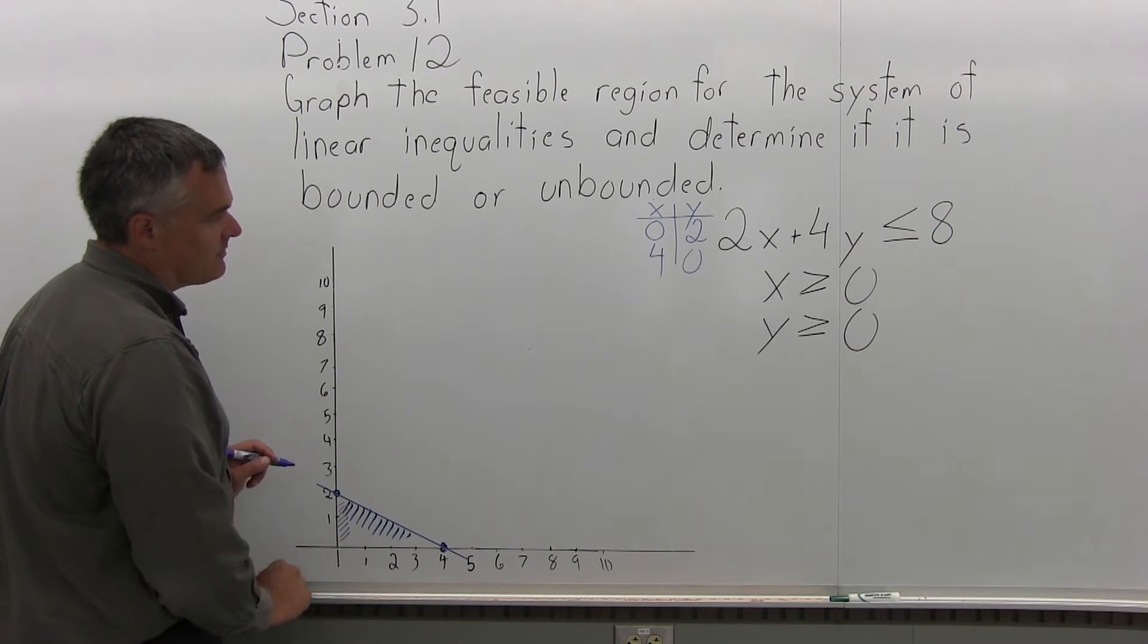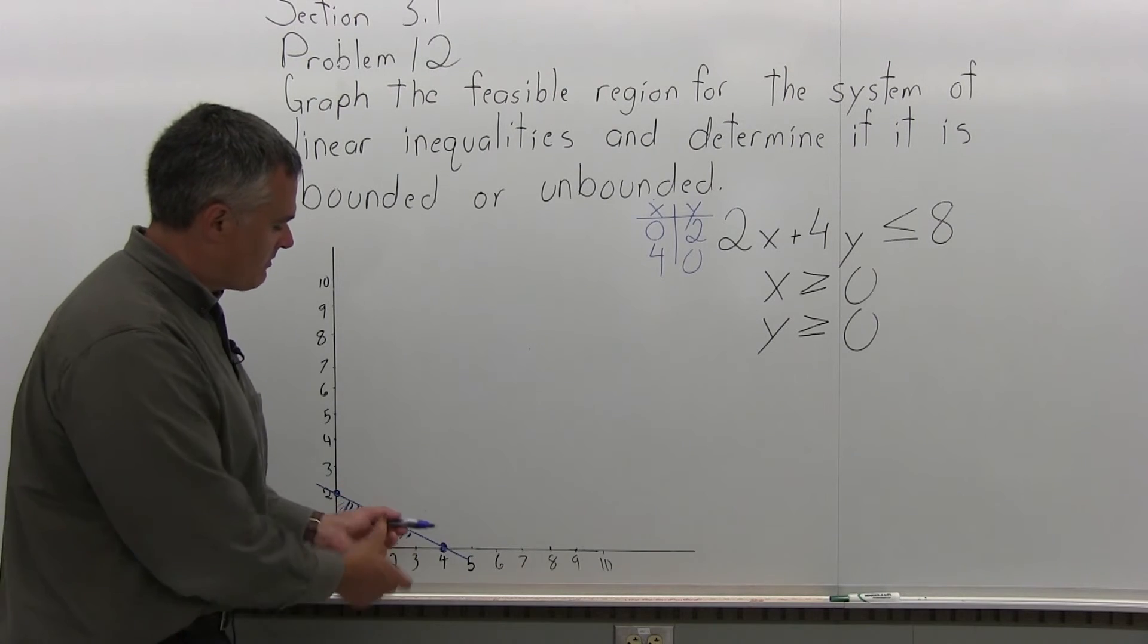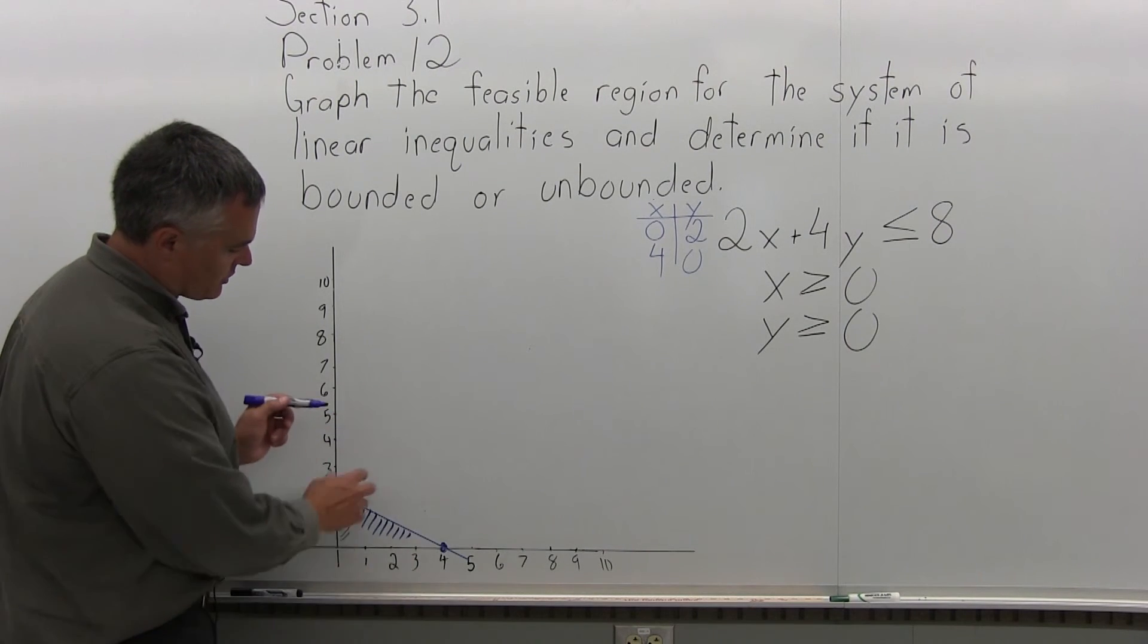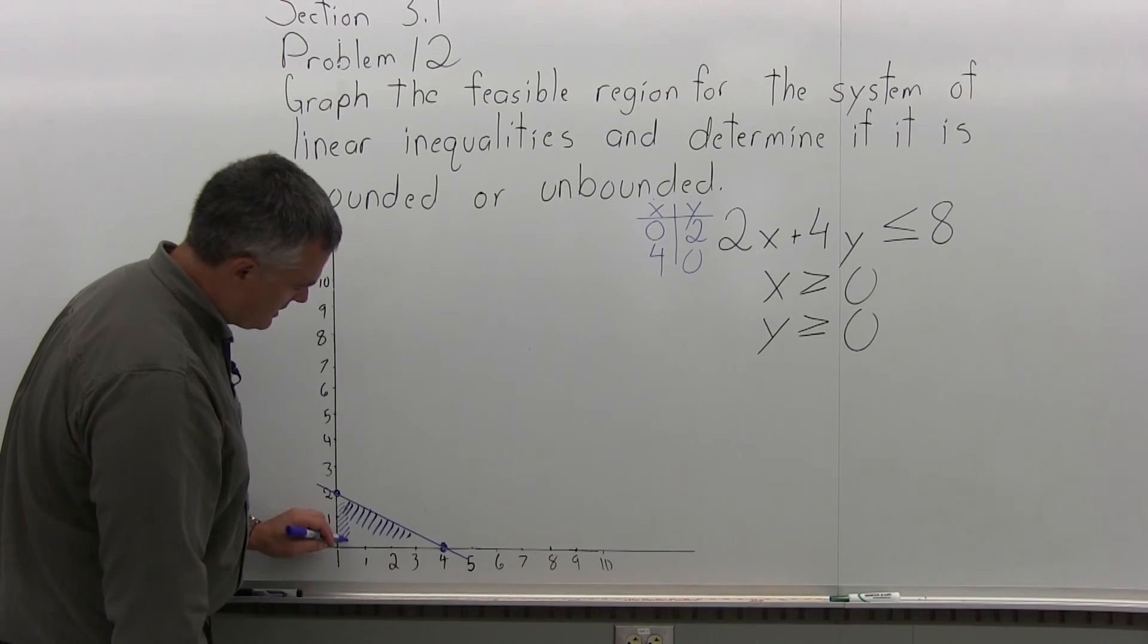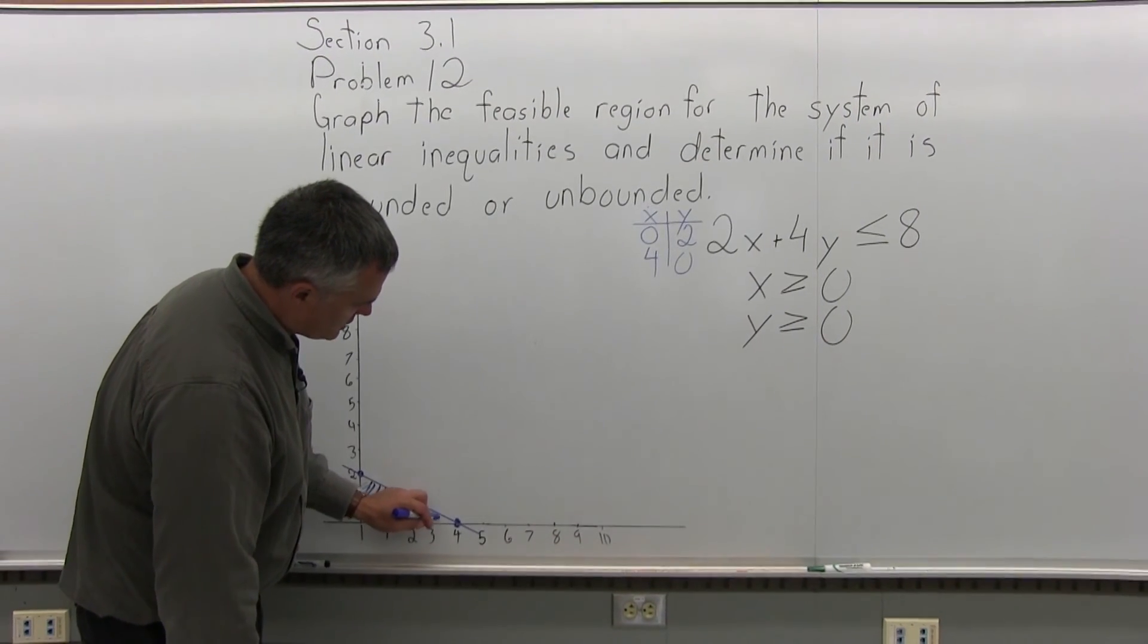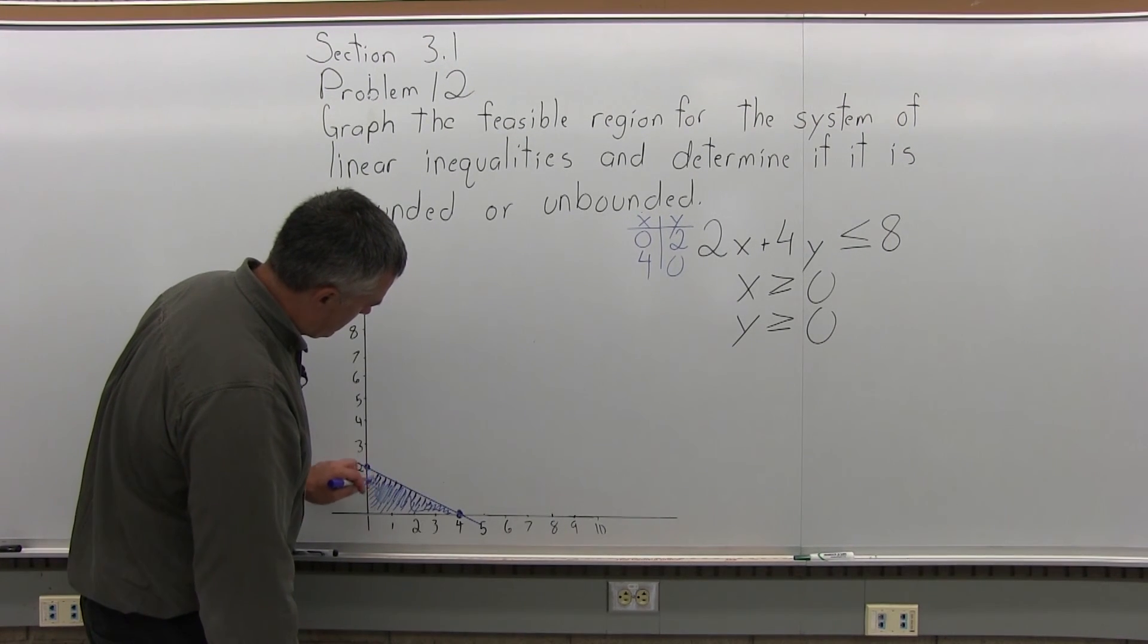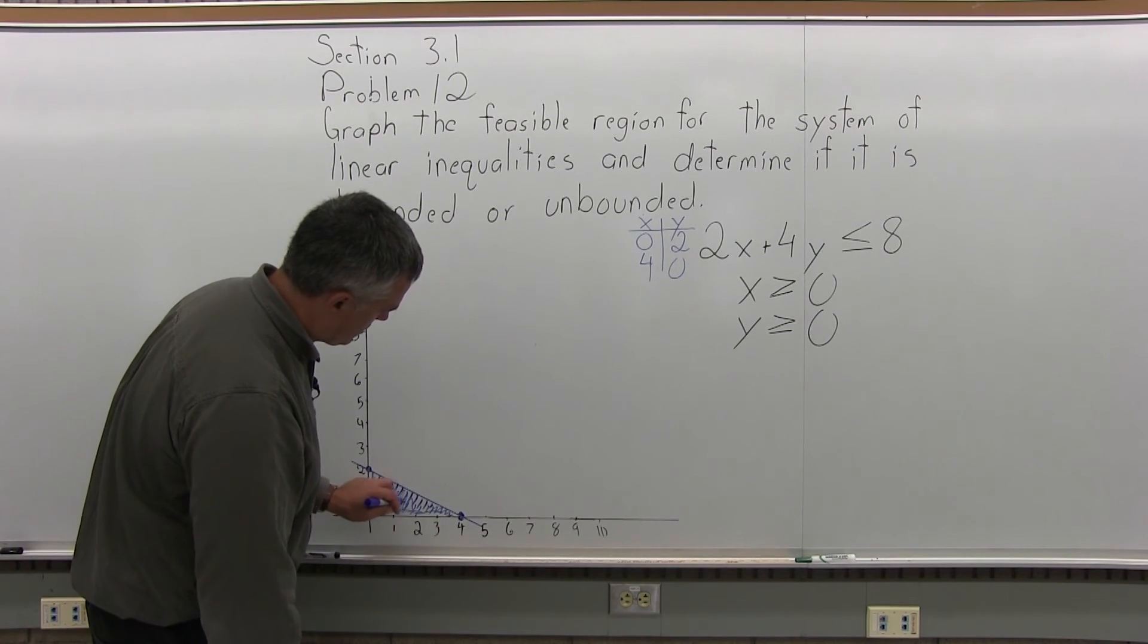And the other one, y is greater than or equal to 0, I want points above the x-axis, points with y-coordinates that are positive, so I'm going to stay above the y-axis too. And now my feasible region winds up being this triangle, this little triangle in the bottom corner here.